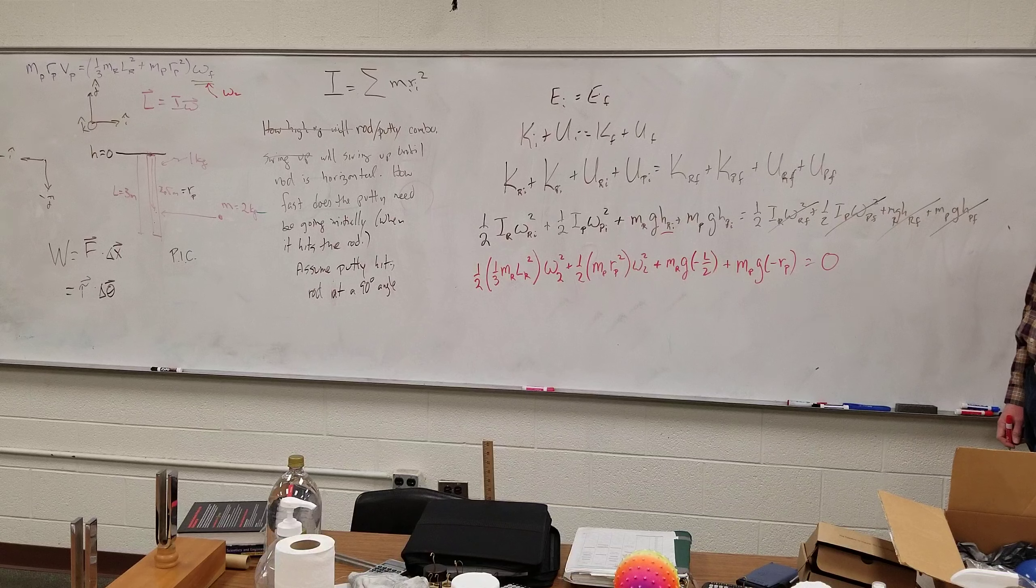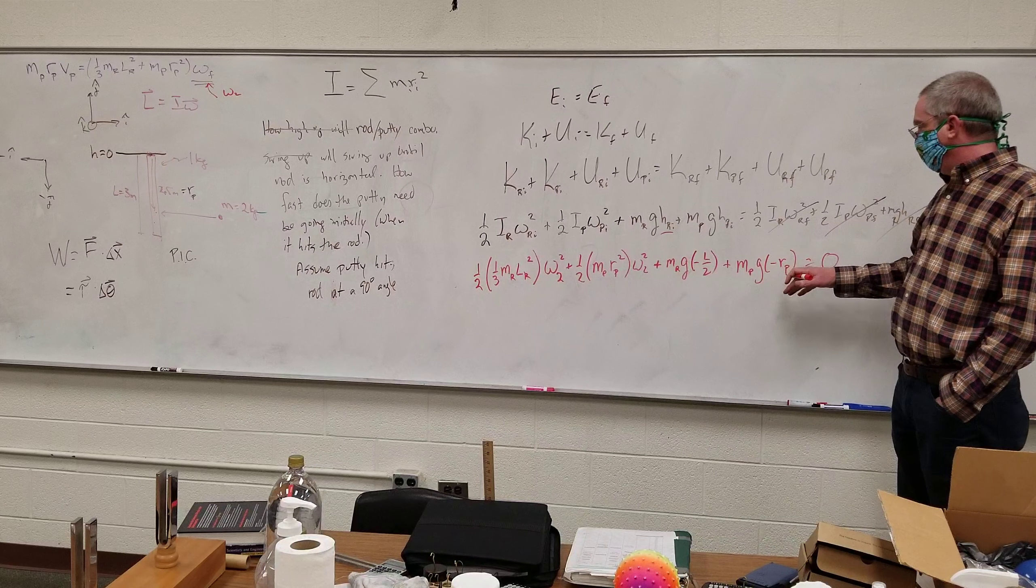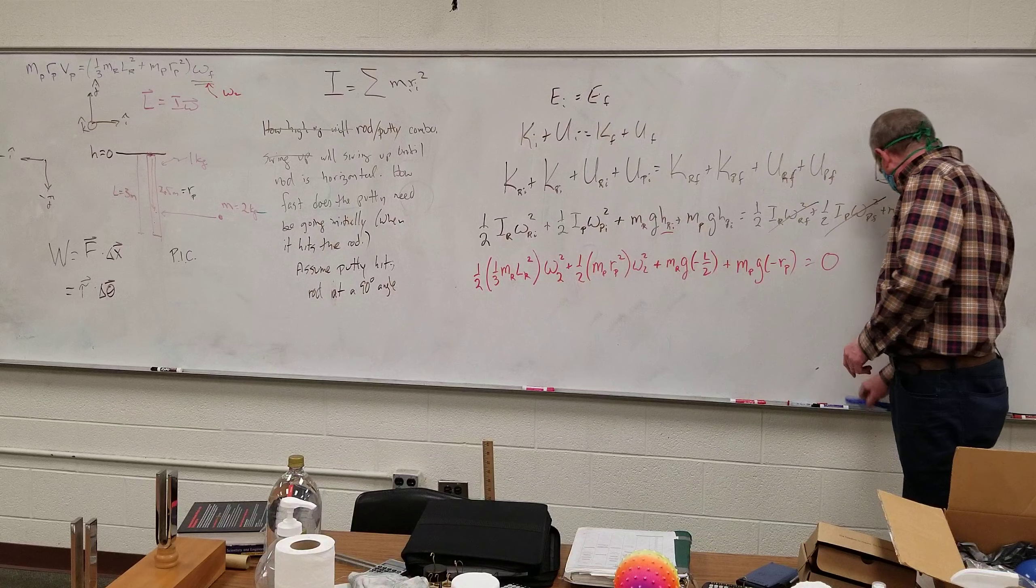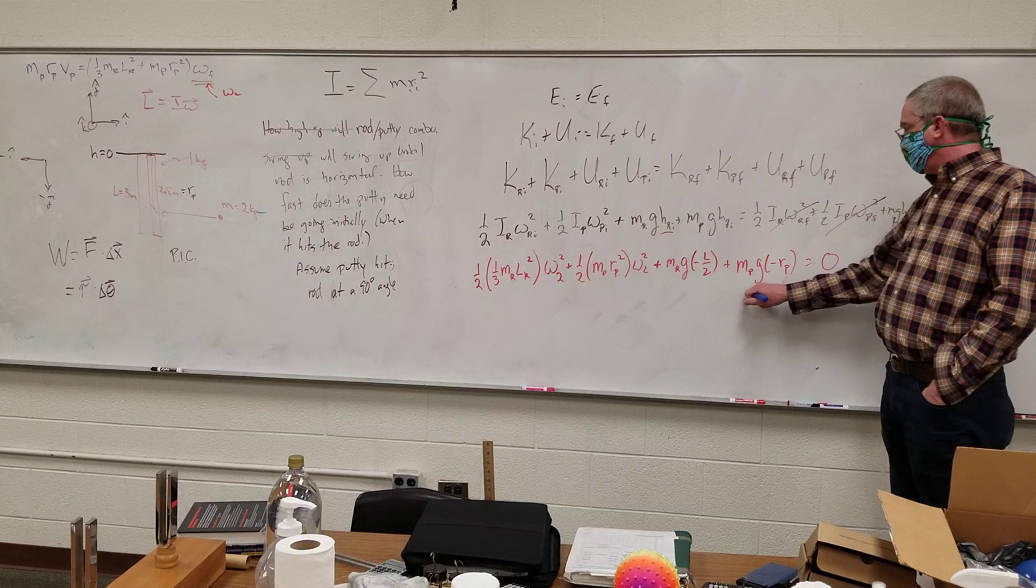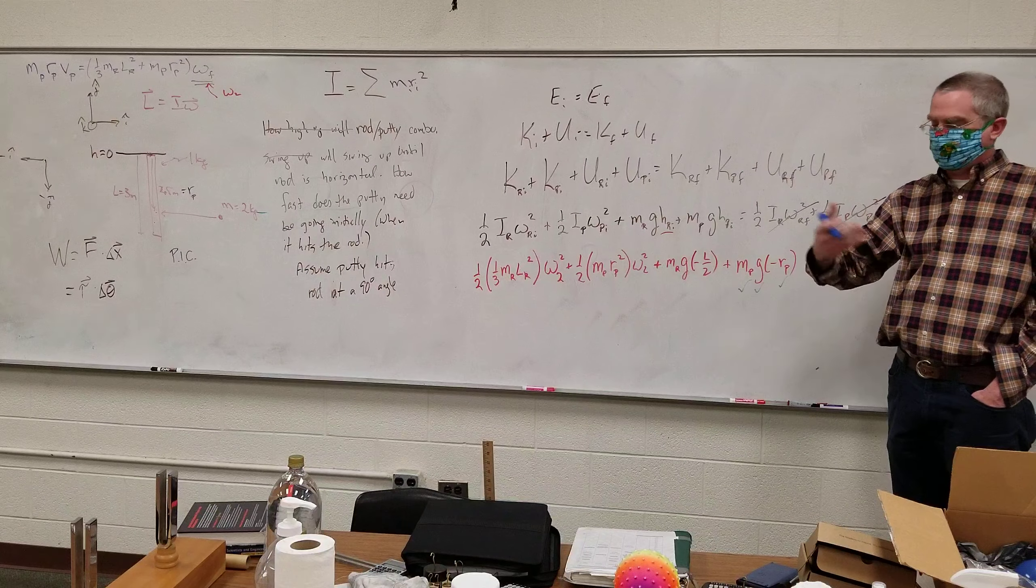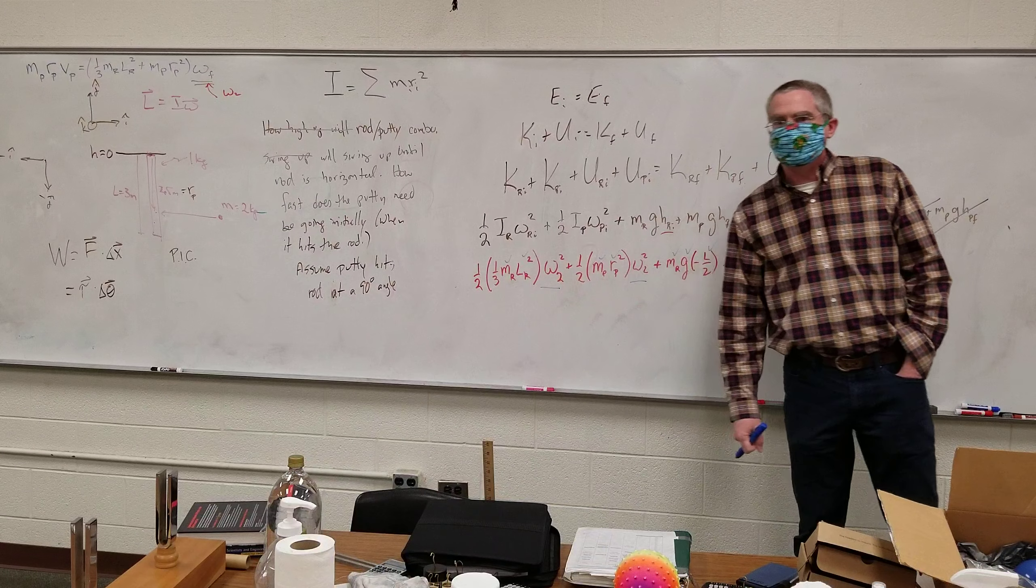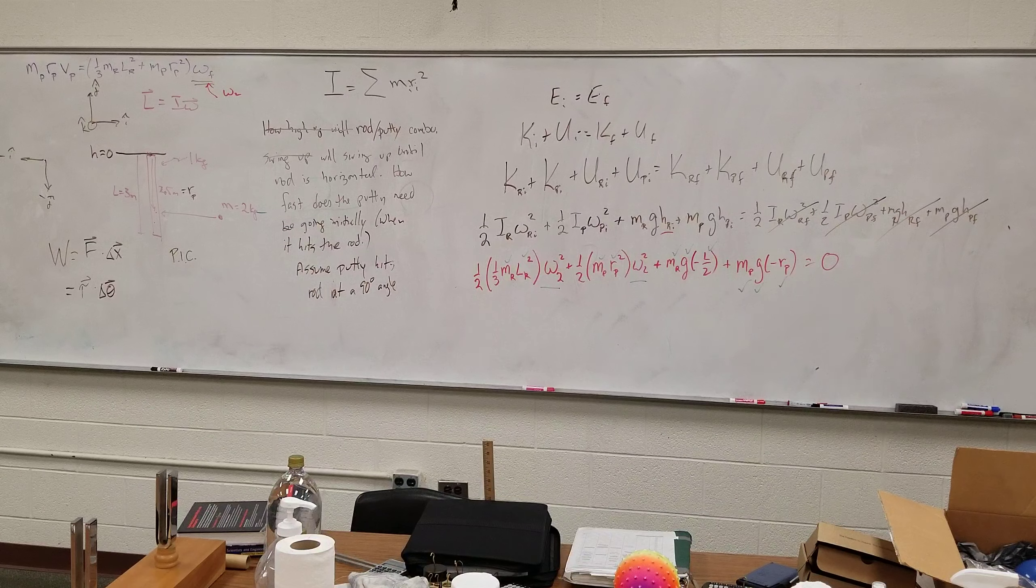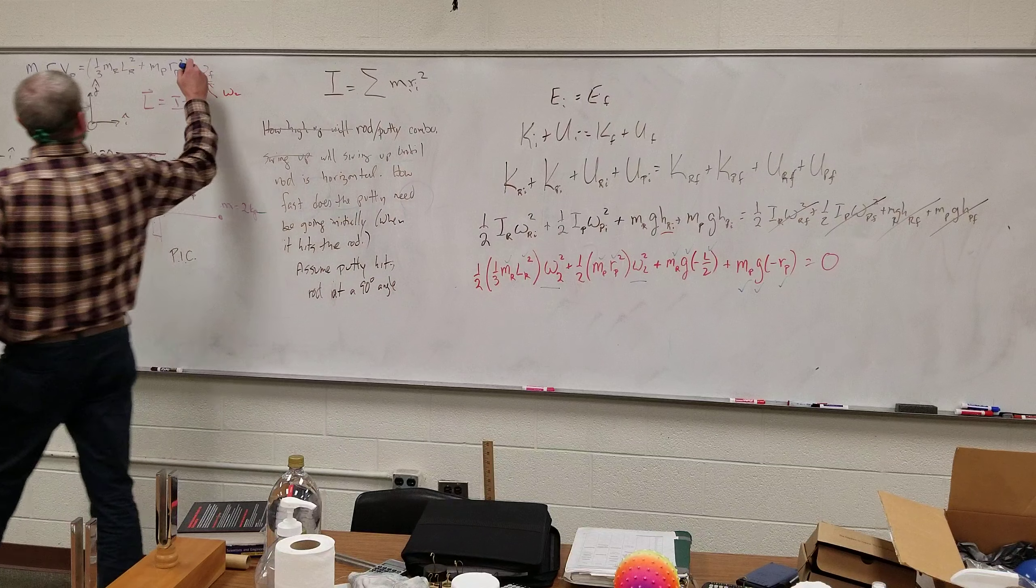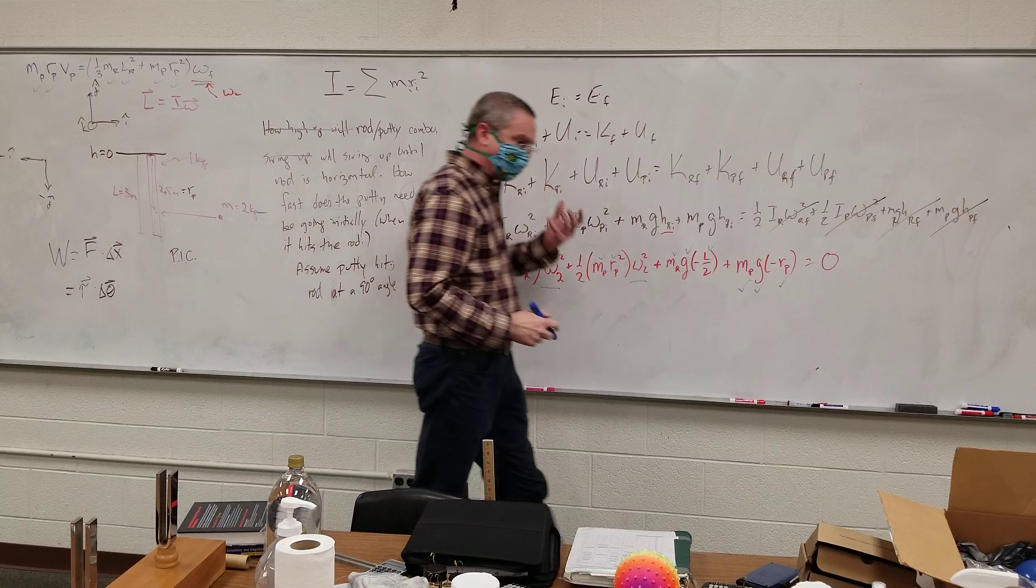Now it might benefit us to stick numbers in at this point, just to simplify it. But let's think about what our unknowns are. We know rp, we know g, we know mp. I did not state this - let's assume it takes place somewhere near the surface of the Earth. We know l, we know g, we know m sub r. We know r sub p, we know m sub p, l sub r, m sub r. Our only unknown is omega 2, the angular speed just after collision. Once we know that, we can plug that into here, because we know all the rest of this stuff. And we can solve for the speed of the putty just before collision.